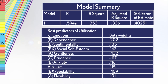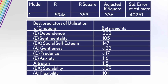The predictors of emotional intelligence — specifically utilization — include dependence: people who bond with others are more likely to utilize emotional information. Sentimentality also matters: people who empathize with others are more likely to use that emotional information. Thirdly, social self-esteem — people who feel comfortable in their own skin and are not self-doubters — are better able to use emotional information to make decisions.